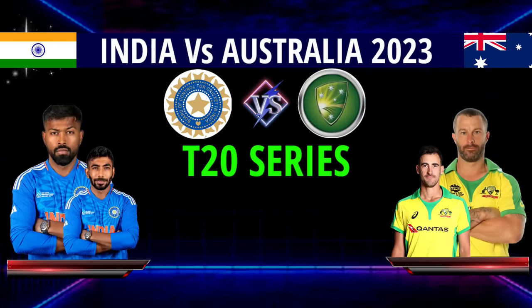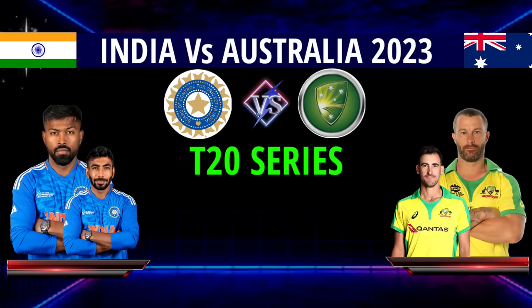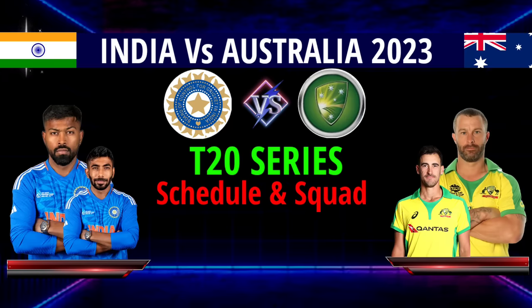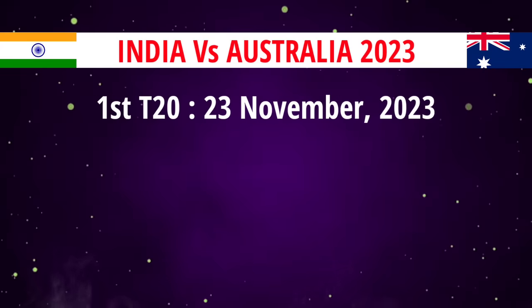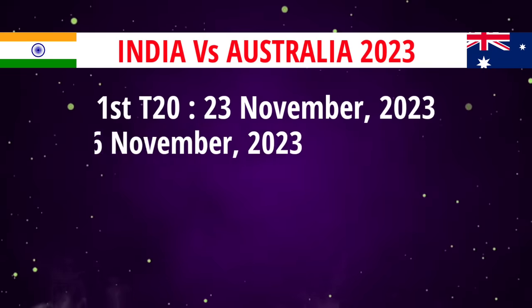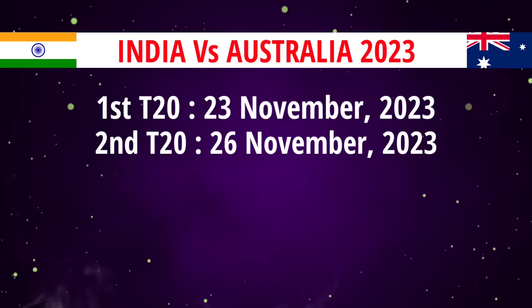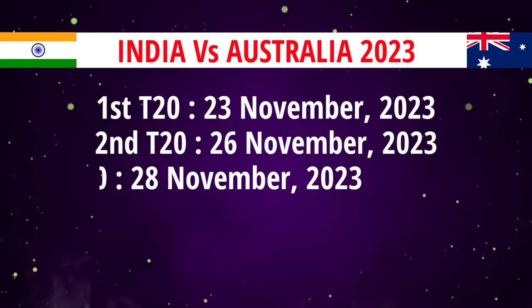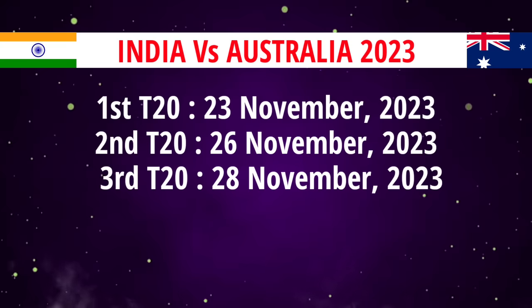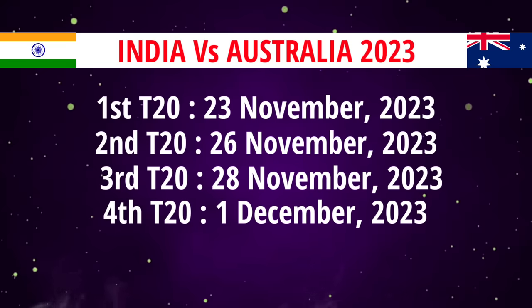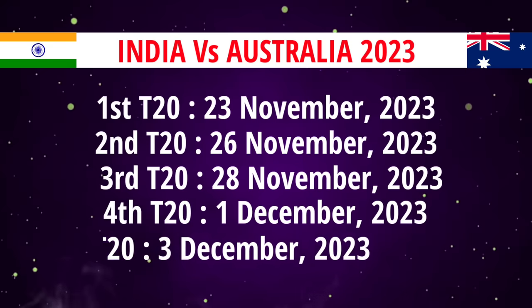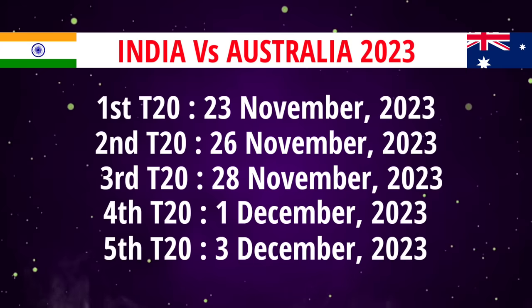India vs Australia T20 Series 2023 Schedule and Team India Best Squad. First T20 Match: 23rd November 2023. Second T20 Match: 26th November. Third T20 Match: 28th November. Fourth T20 Match: 1st December. Fifth and Last T20 Match: 3rd December 2023.